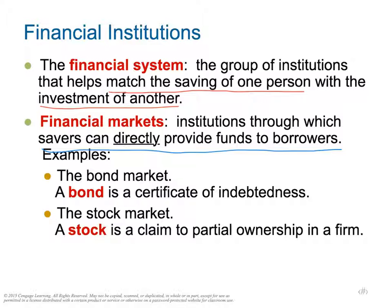We have two different types of markets: the bond market and the stock market. A bond is called debt financing — we have to repay it back — whether from a business or government standpoint. A stock is called equity financing, because we're selling ownership in the firm and don't have to pay that back. Most business organizations will probably have some combination of debt and equity financing.